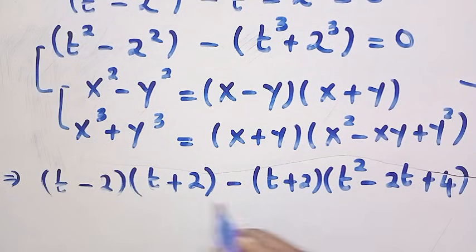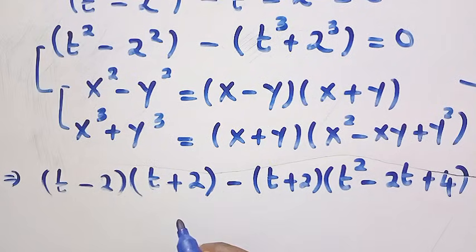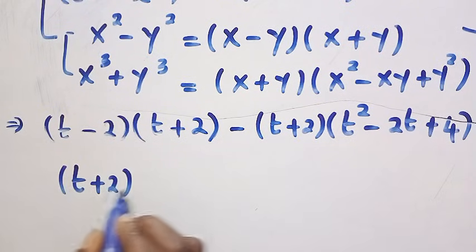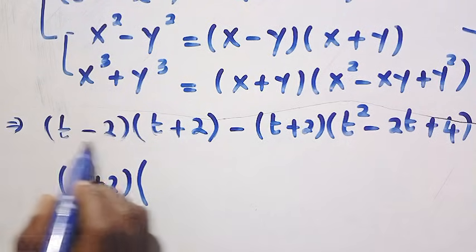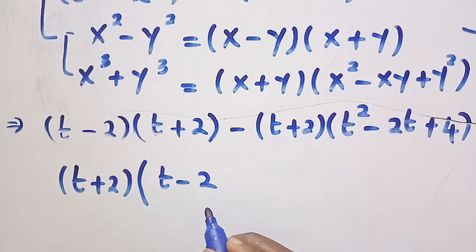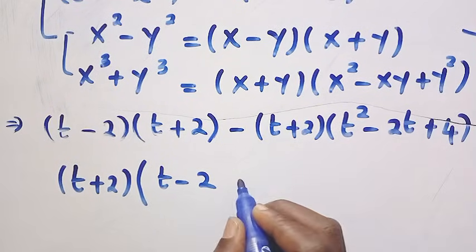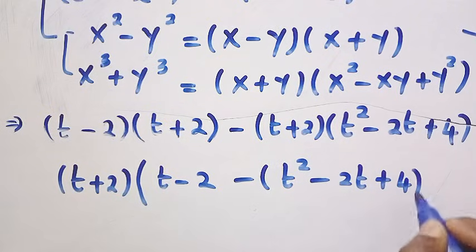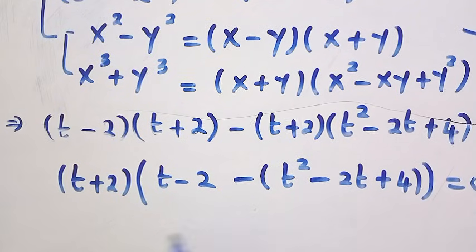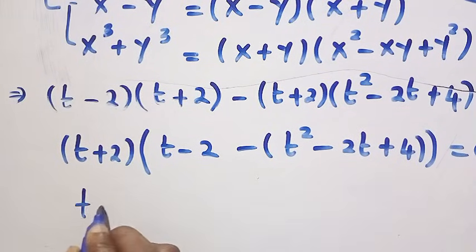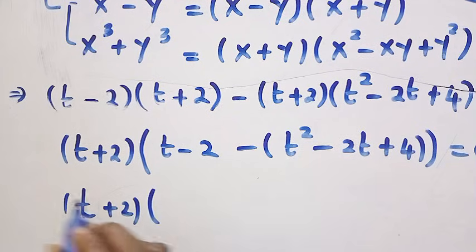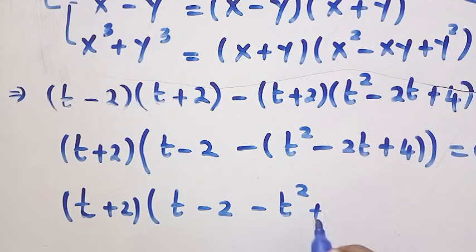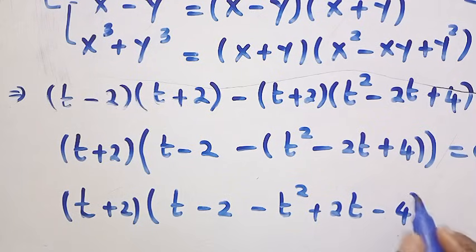We notice t plus 2 appears in both terms, so we factor out t plus 2. Dividing each term by t plus 2, we get t plus 2, multiplied by open bracket t minus 2, minus open bracket t squared minus 2t plus 4, equals 0. Opening the negative bracket gives t plus 2, multiplied by t minus 2 minus t squared plus 2t minus 4, equals 0.